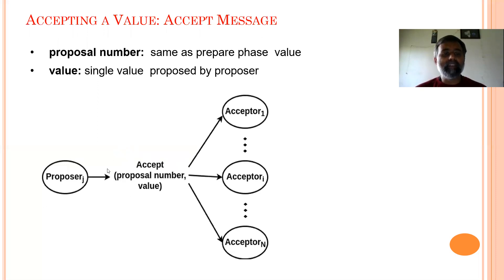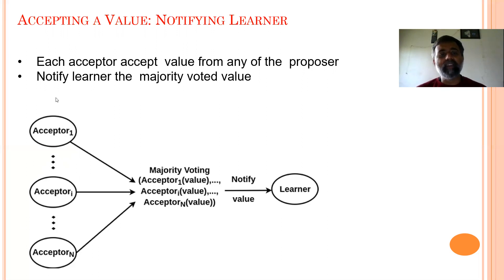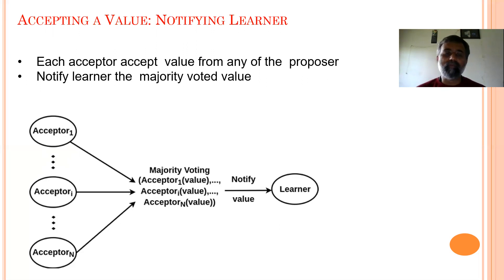The proposer will send the accept message to all the acceptors. The proposal number will be the same as proposed in the prepare phase, along with the single value proposed by the proposer. When accepting a value, it will be notified to all the learners. Each acceptor, when accepting this value from any proposer, will notify all learners about this majority voting, so that all nodes in the network will be on the same state regarding the final consensus.